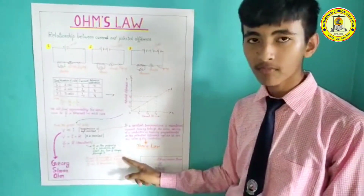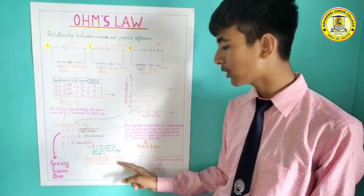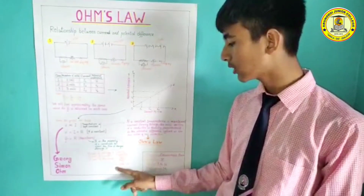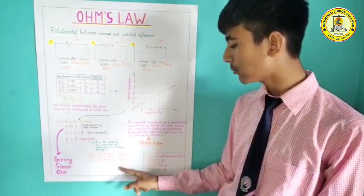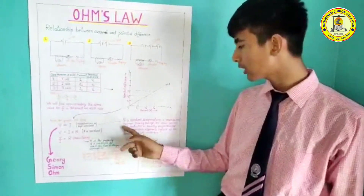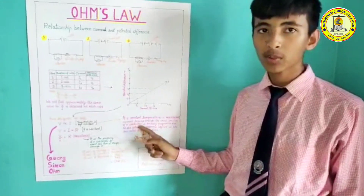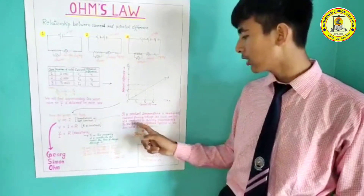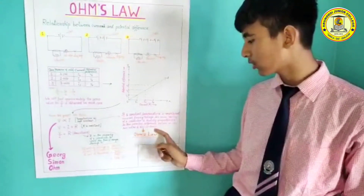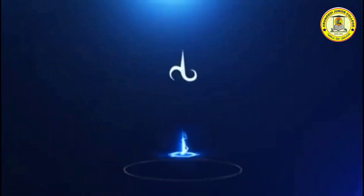Since the unit of voltage is volts and the unit of current is amperes, the unit of resistance is volts per ampere, which is named the ohm. So Ohm's law states: if a constant temperature is maintained, the current flowing through the cross-section of a conductor is directly proportional to the potential difference applied at the two ends of the conductor. This is the main concept of Ohm's law. Thank you.